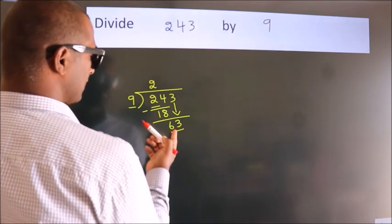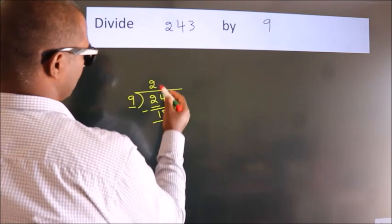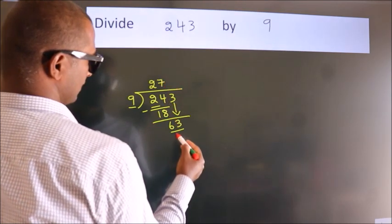When do we get 63? In 9 table, 9 7s, 63.